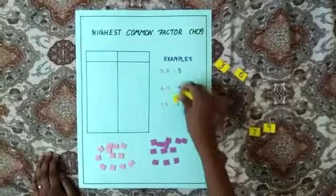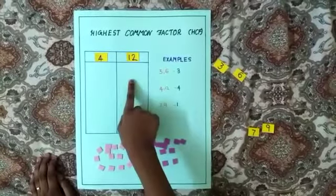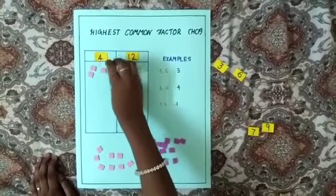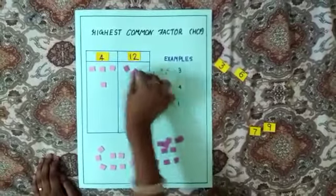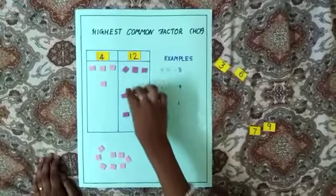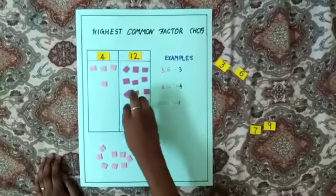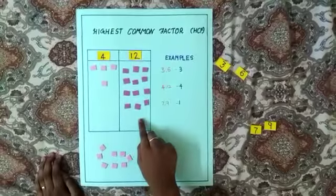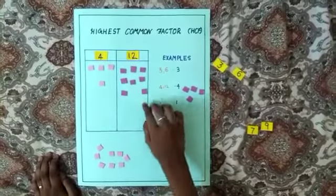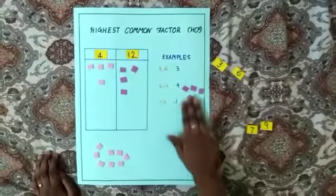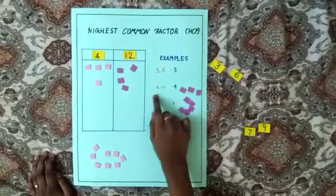Now I am going to find the HCF of 4 and 12. Take 4 coins here and take 12 coins here. Now 4 is less than 12, so remove 4 coins here. Again 4 is less than 8. Remove 4 coins here. Now 4 are equal. So the highest common factor, that means HCF of 4 and 12, is 4.